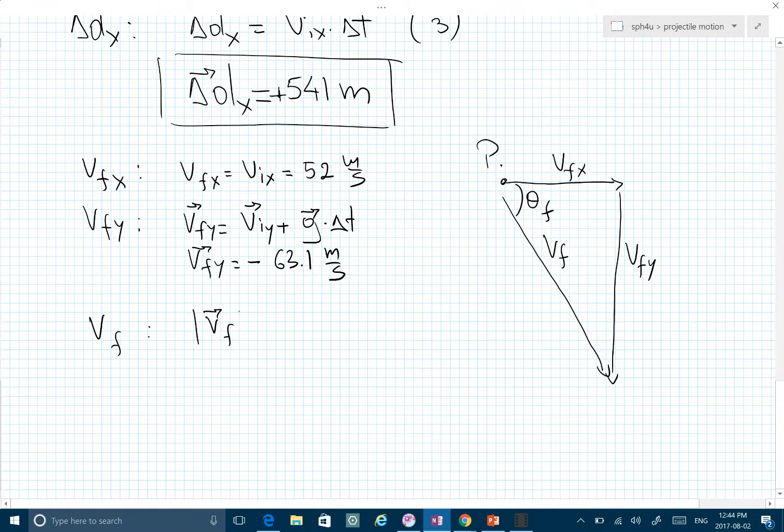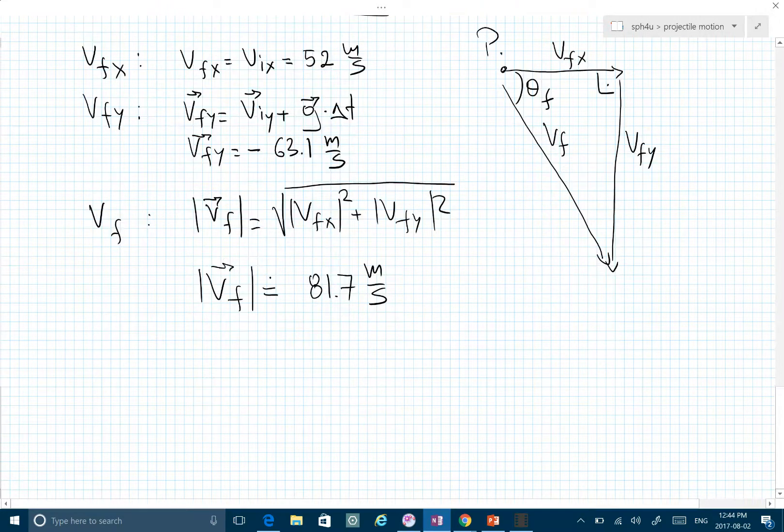VFY and VFX are the components, so we use the Pythagorean theorem: VFX squared plus VFY squared. We find the magnitude of VF to be roughly 81.7 meters per second. We expected it to be greater than the initial velocity because it's going further down than where it started.